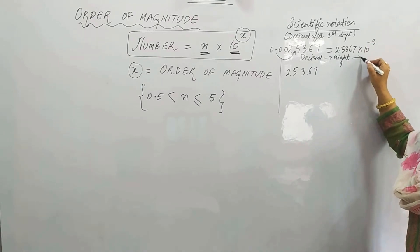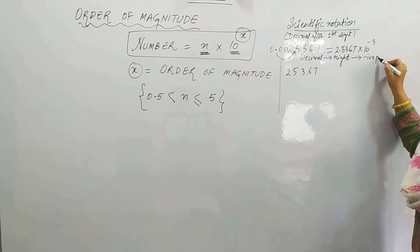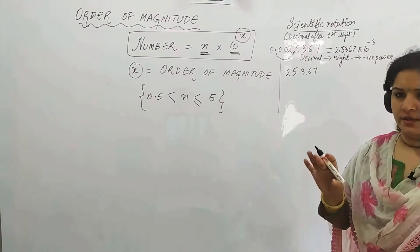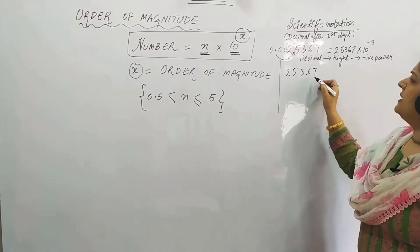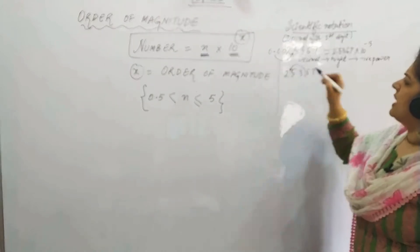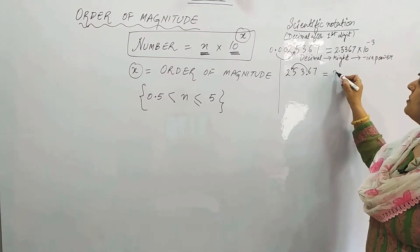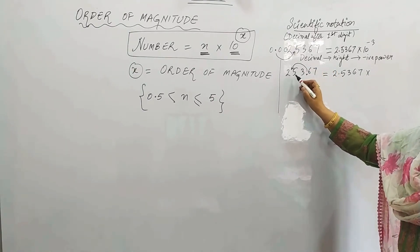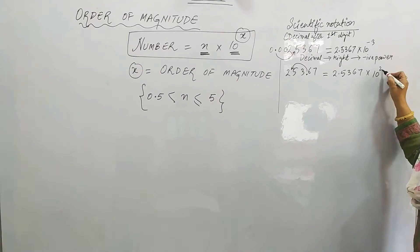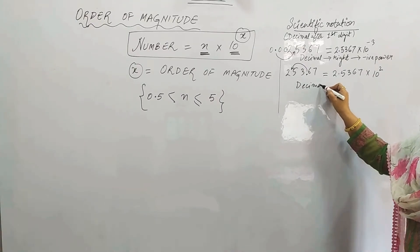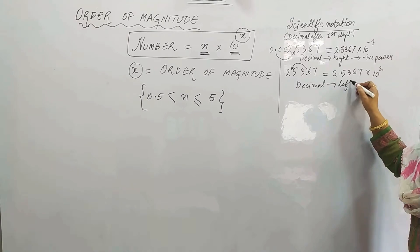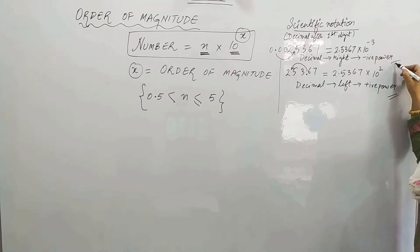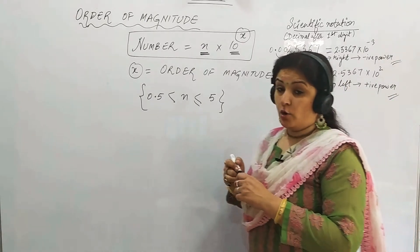When the decimal moves to the right, the negative power increases. I hope you know this from previous classes. And when the decimal moves to the left, the positive power of 10 increases. For example, converting 25367 to scientific notation: the decimal moves 4 places to the left, giving 2.5367 × 10⁴.